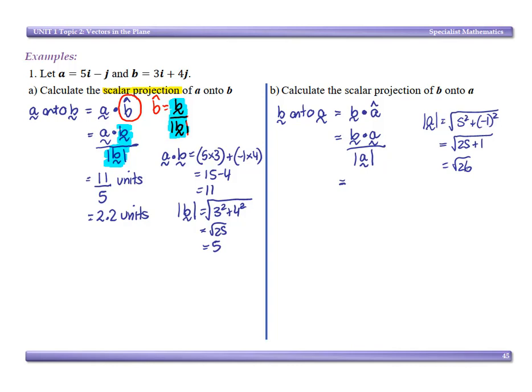Now my dot product I found from part a, which was 11, so that's 11 over the square root of 26. I need to rationalize my denominator, so this becomes 11 square root of 26 over 26 units.